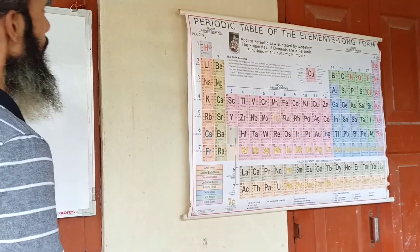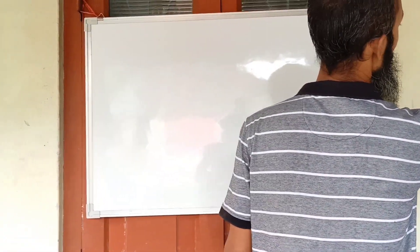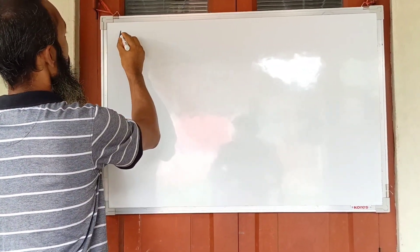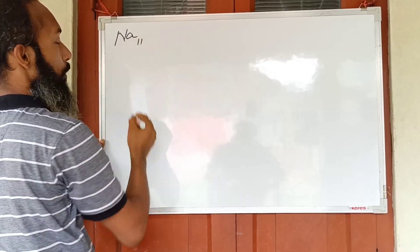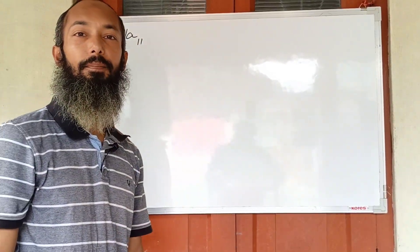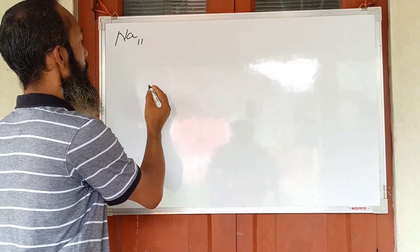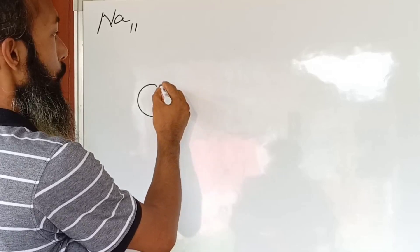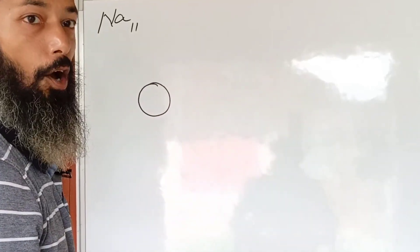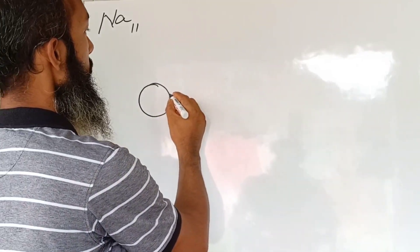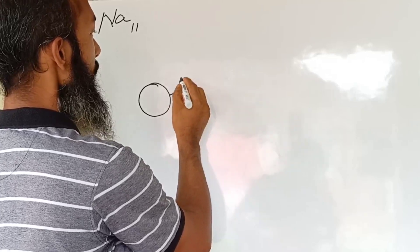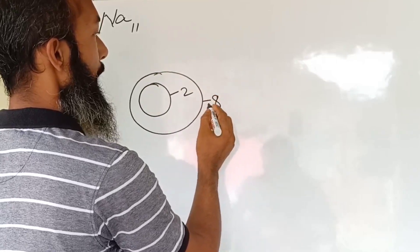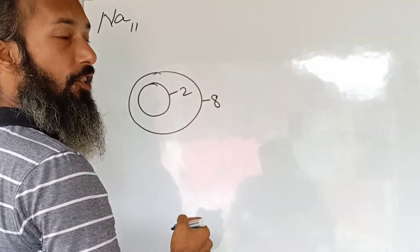Let us consider the example of sodium. The symbol of sodium is Na, and its atomic number is 11, so it has 11 electrons. We have to go through the energy levels. The first shell is known as the K-shell or K-orbit; it has the capacity to occupy two electrons. The second shell, called the L-shell, has the capacity to occupy eight electrons.